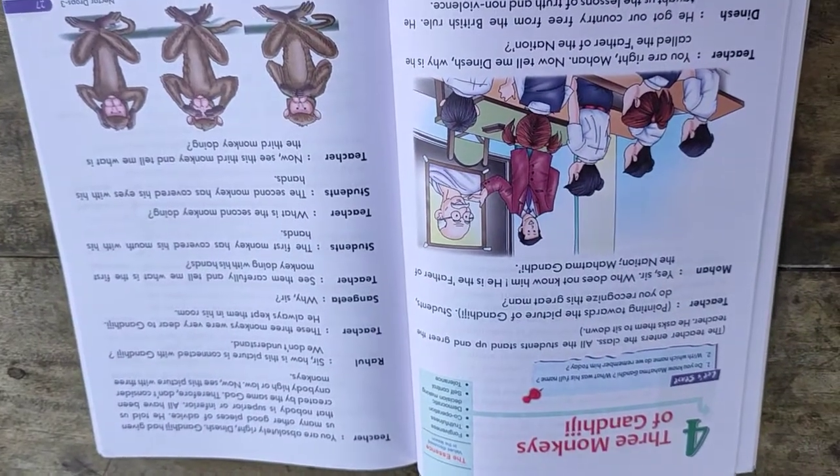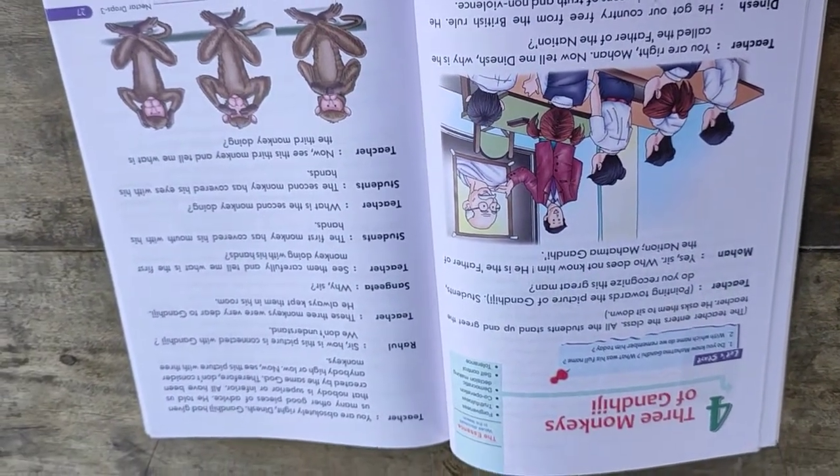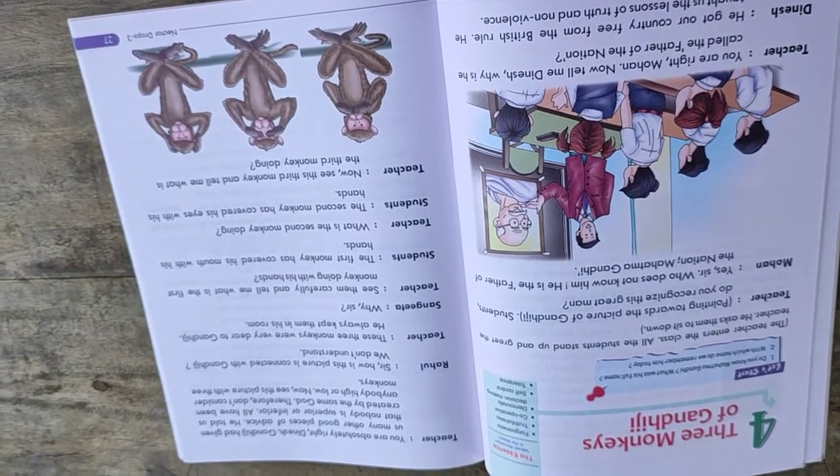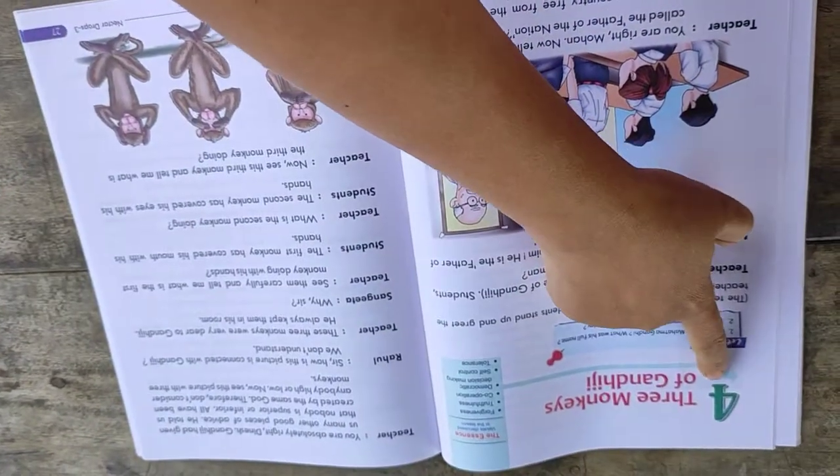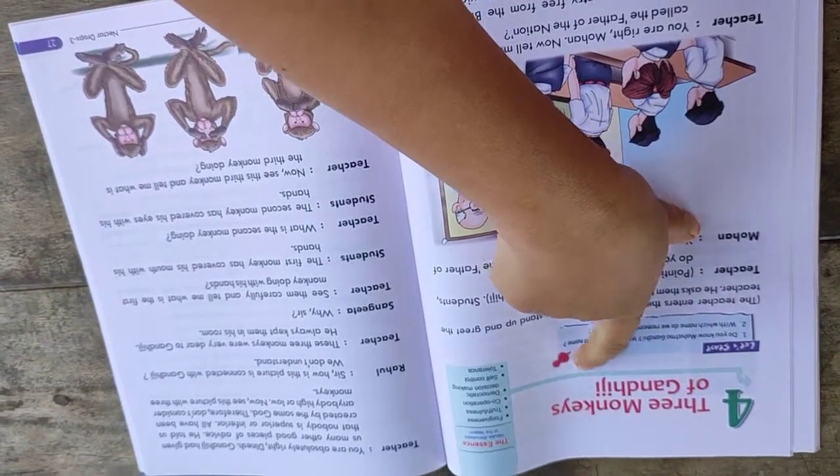Good morning kids. It's been a long time. So welcome back after a long interval. Okay, so let's start our chapter. Today the chapter is number 4, Three Monkeys of Gandhiji.